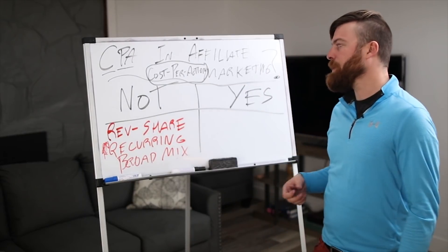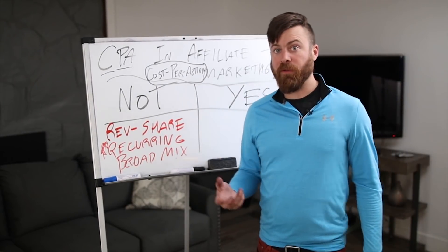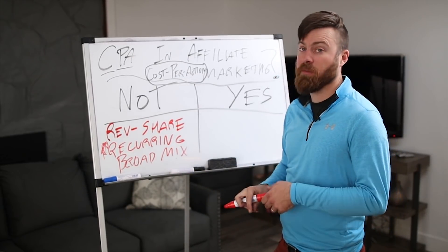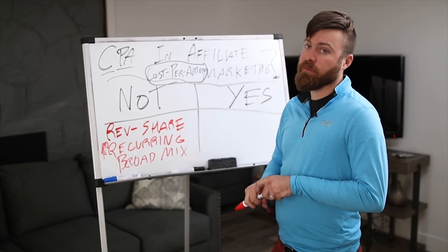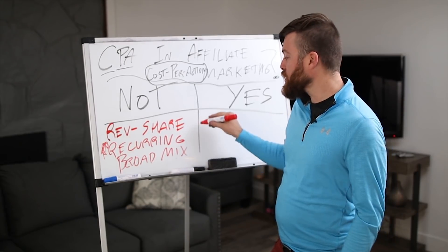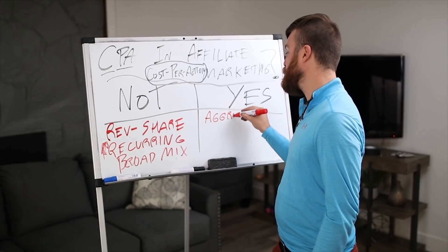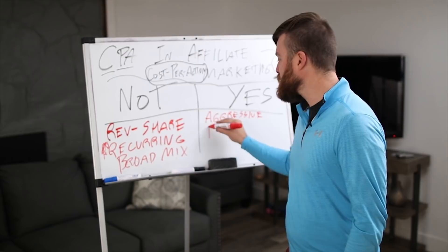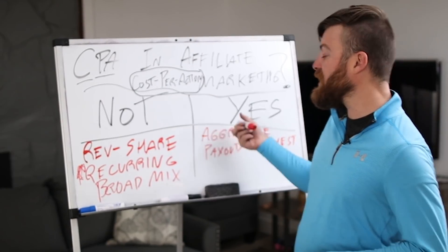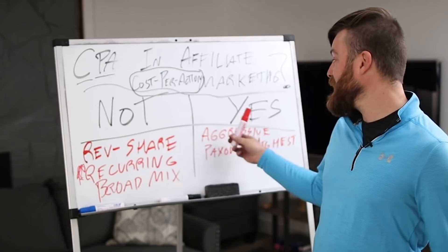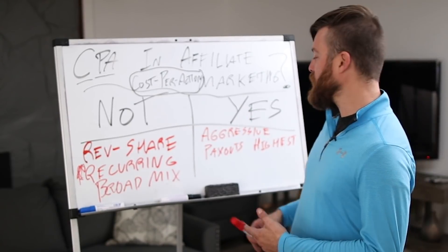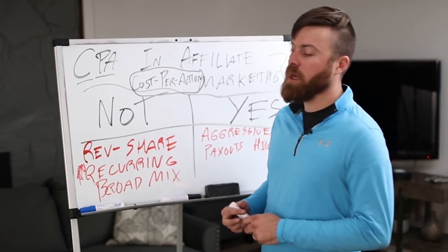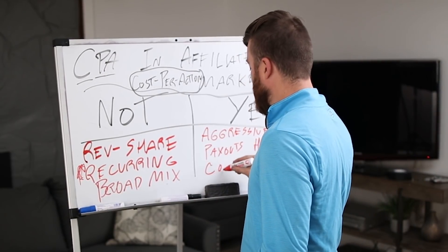What CPA offers in affiliate marketing — let's talk about what they are, because right now it sounds kind of bad since you don't get recurring commission. CPA offers are by and large the most aggressive offers out there and the payouts are the highest. Generally, there are also a lot more scam products in the CPA world because they're marketed so aggressively and the payouts are so high. It's also a very competitive space.